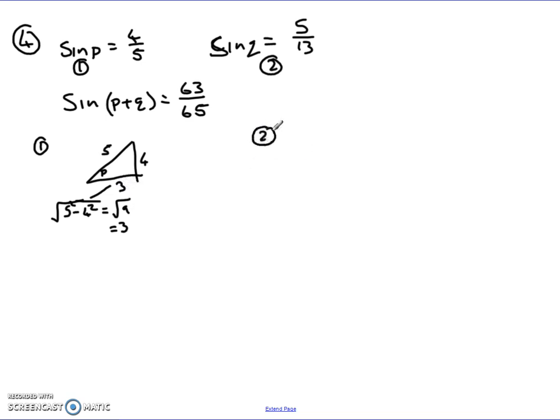If I then set up my second right angle triangle here, and call this angle here Q, I know again using SOH-CAH-TOA, opposite over hypotenuse, I've got a length here of 5, and my hypotenuse is 13. Again, I can use Pythagoras to get my missing side,